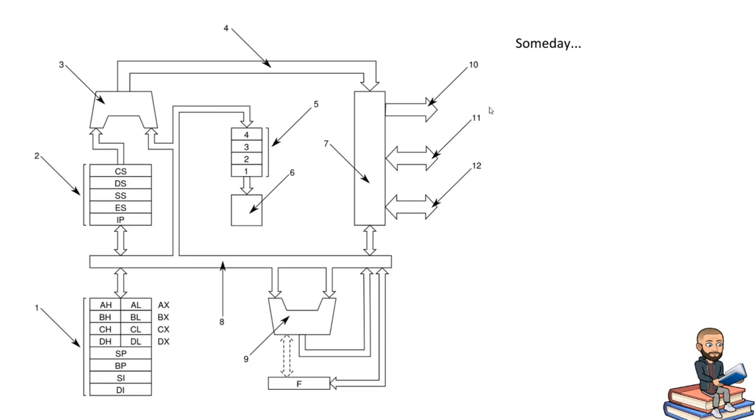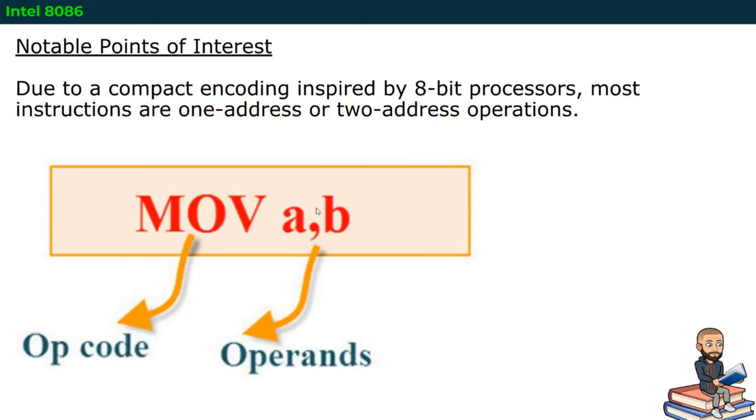Someday, I hope to dive deeper into a diagram like this. But, essentially, inside of a chip, you have certain buses. This one is called the internal data bus. Up here, you have the address bus. The bus, as you can kind of hear in the name, it's all about transporting the ones and zeros into the places that they need to go. So, when you're doing something like moving a value from one place to the other, that value would need to exist for a short time on a bus.